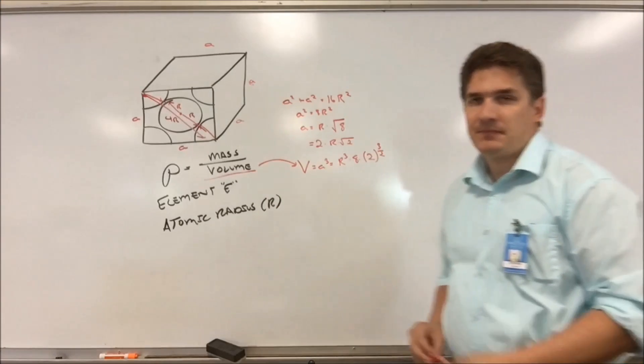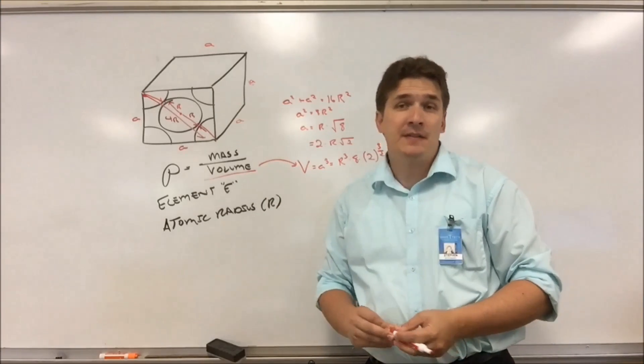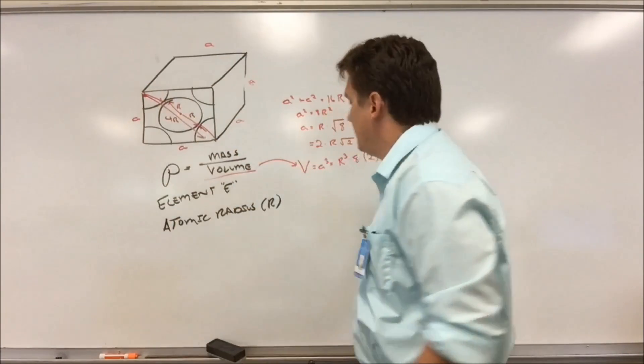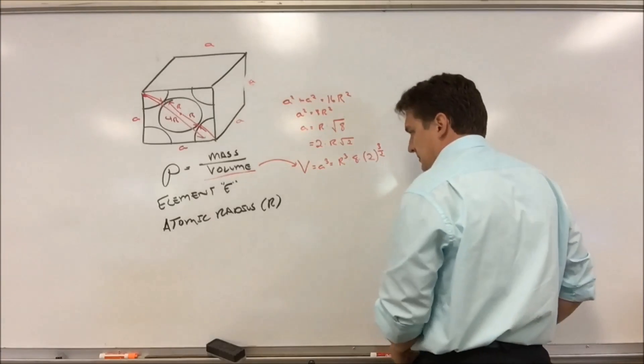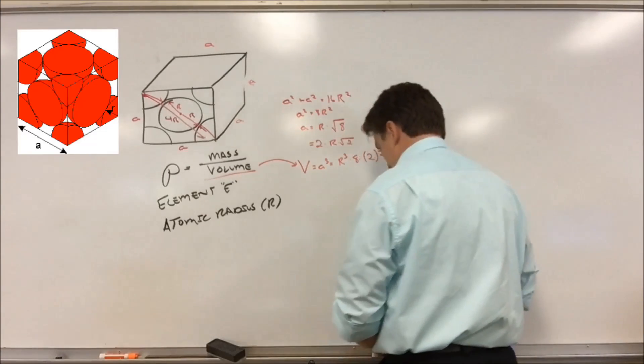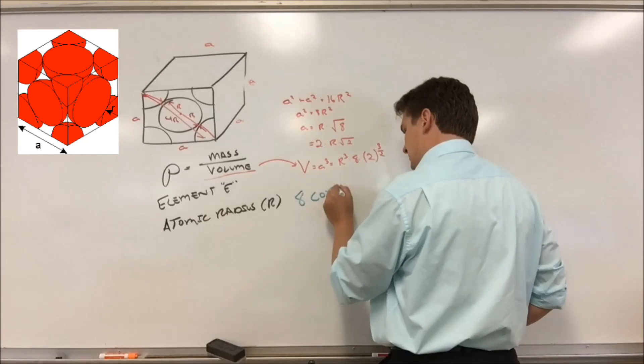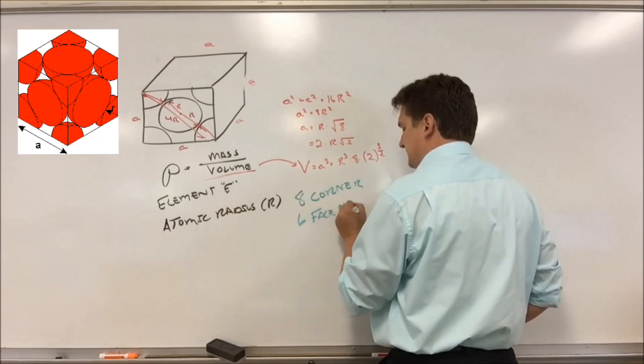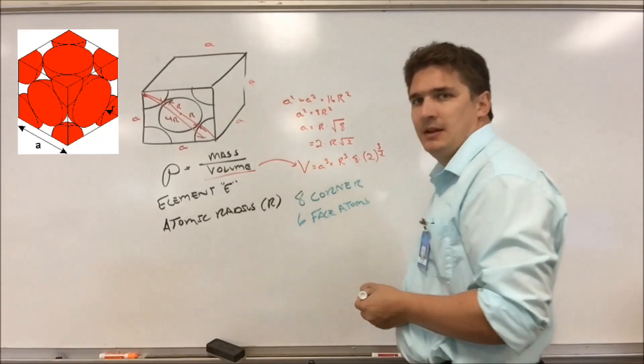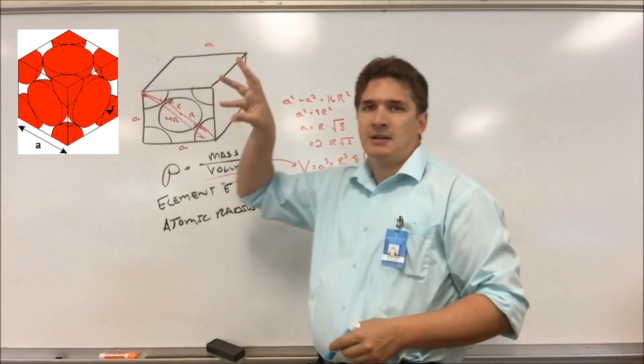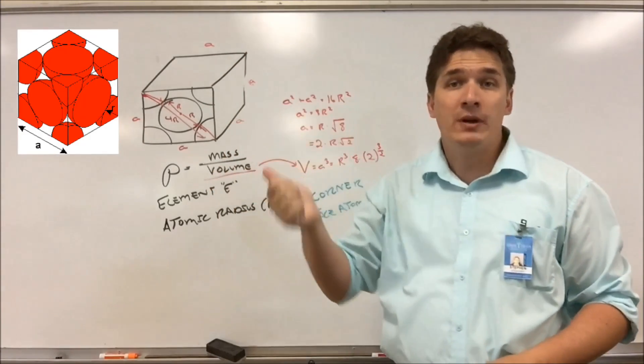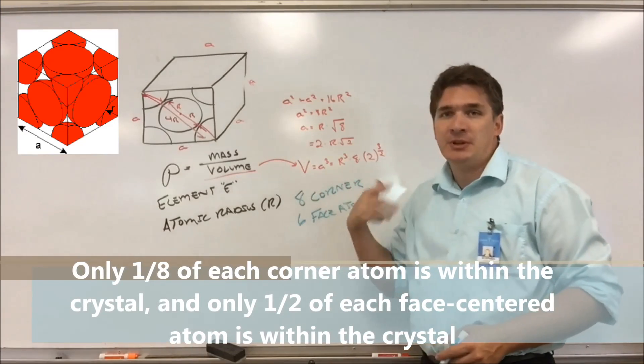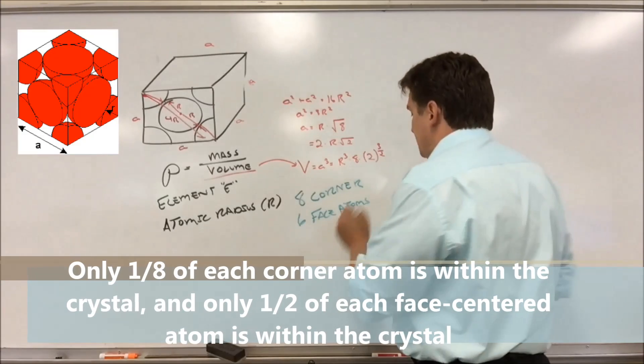Now we need to figure out the mass. So how do we do it? Well, we've got atoms, right? We've got an atom in each corner and one in each face. So we've got 8 corner atoms and 6 face atoms. Now, each corner atom, the entire atom isn't within the crystal. Only part of it is. In fact, 1/8th of the atom is within the crystal itself. So for each corner atom, we get an eighth of an atom. Since we've got eight of them, we get one total atom.